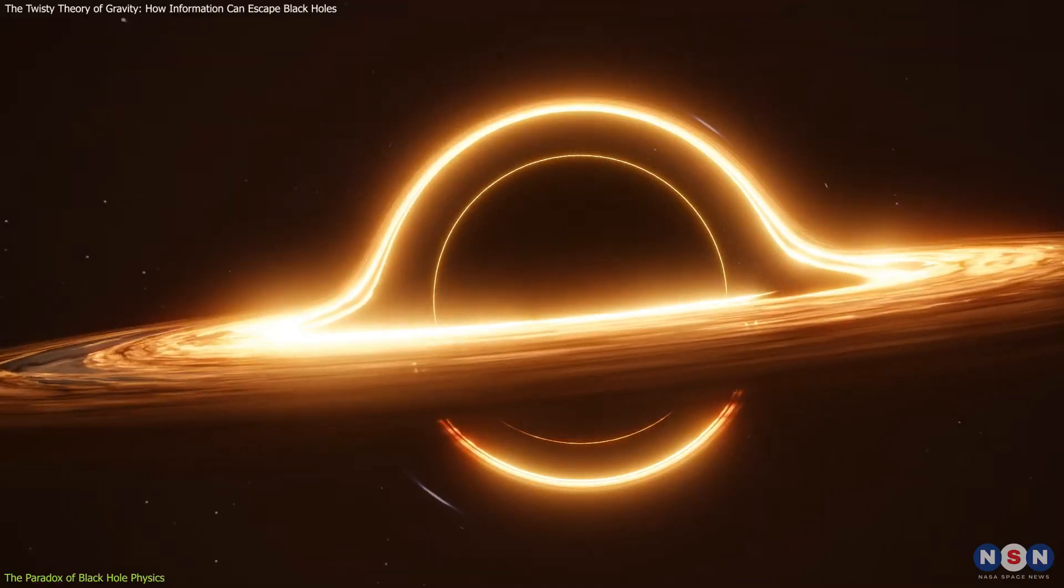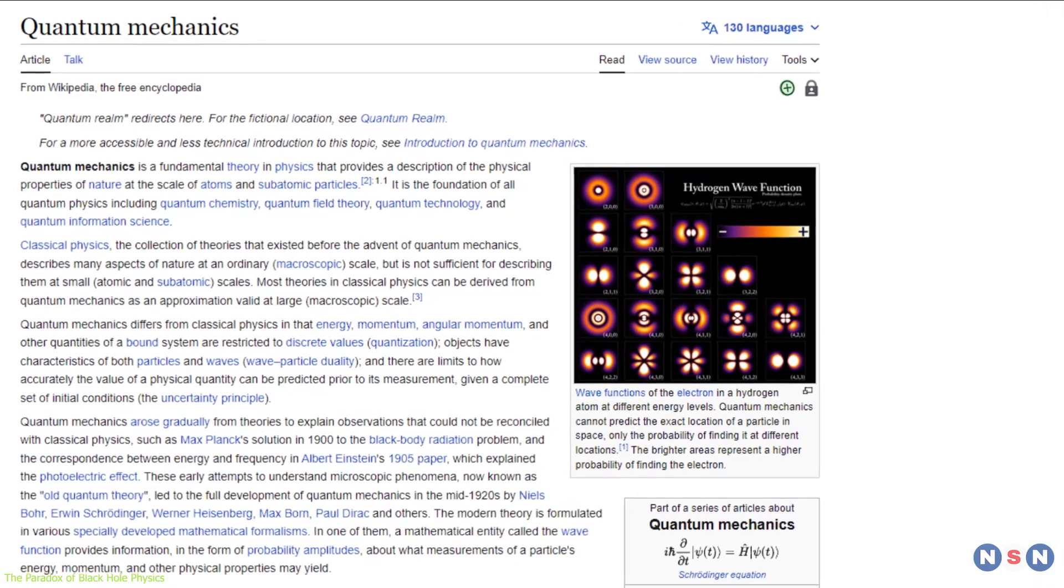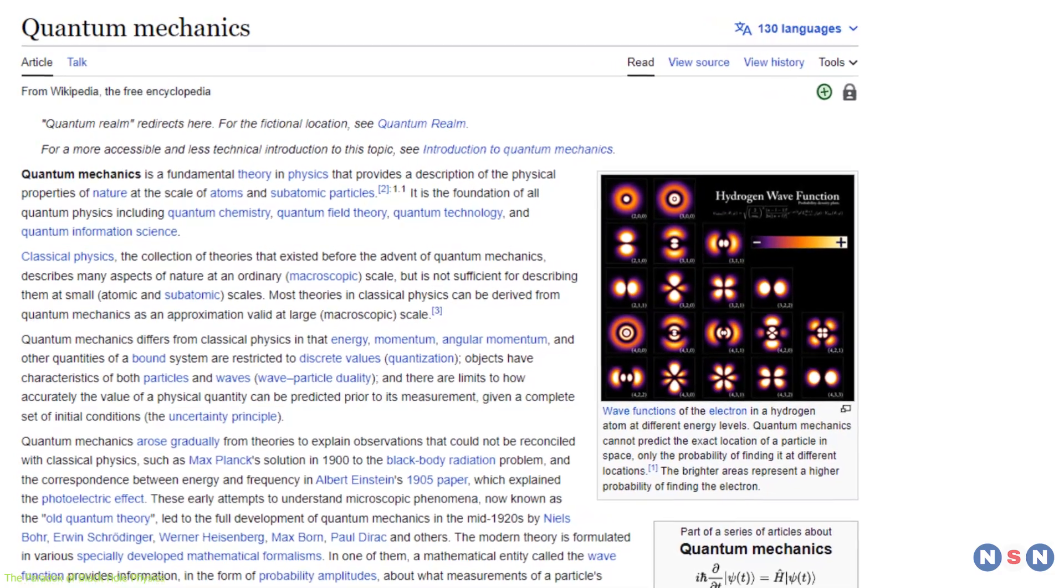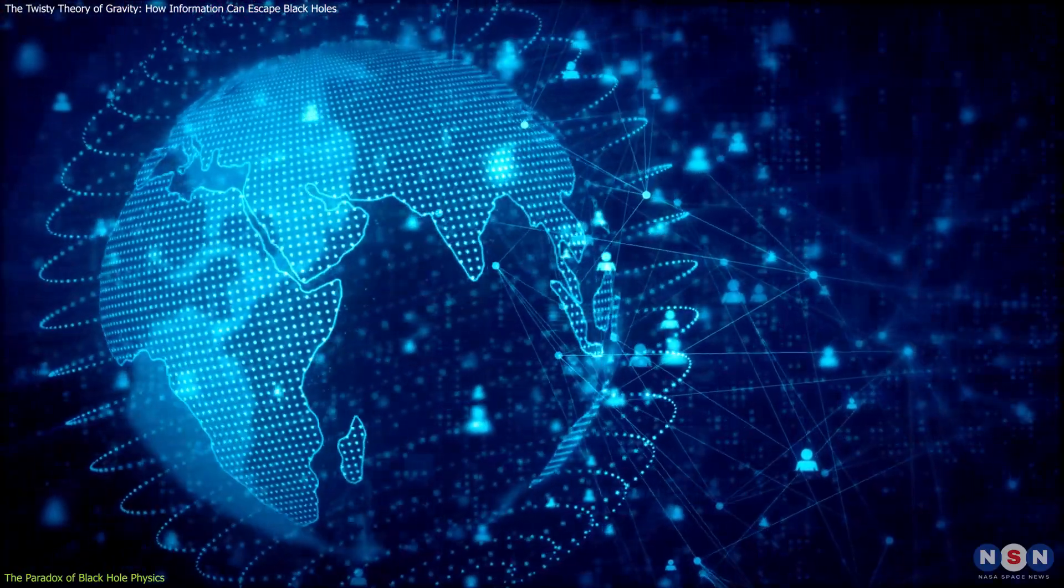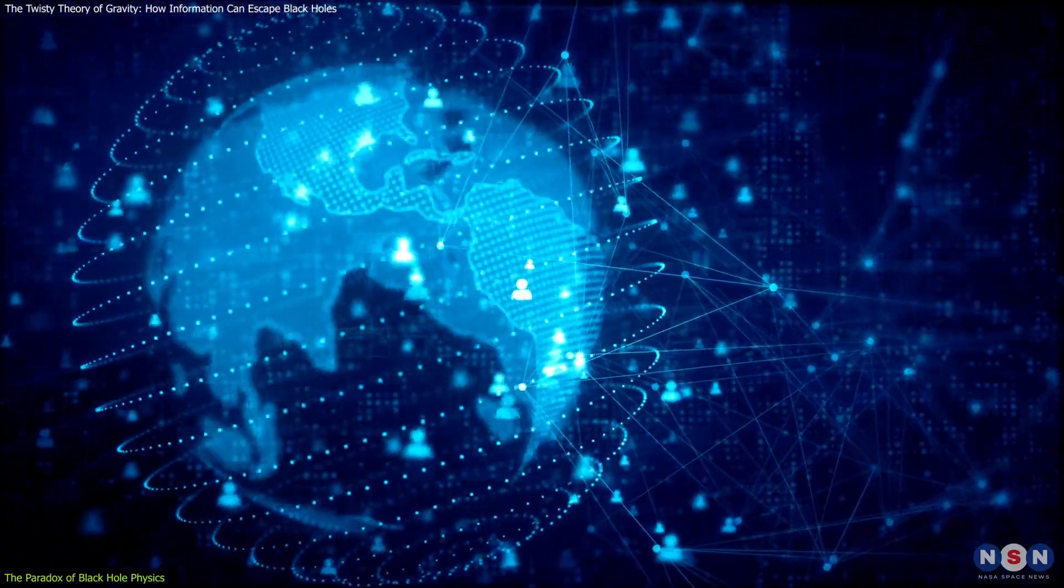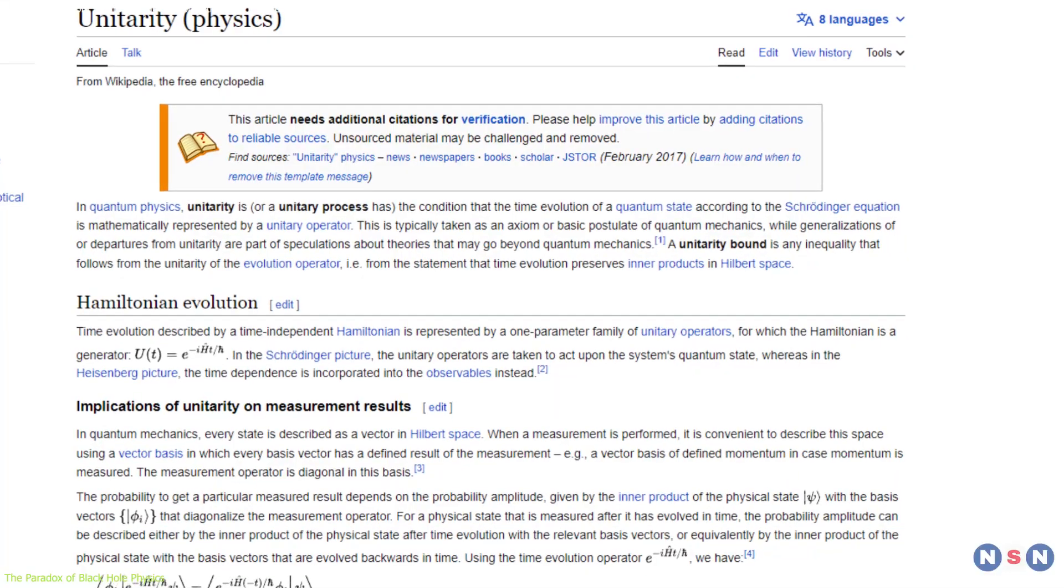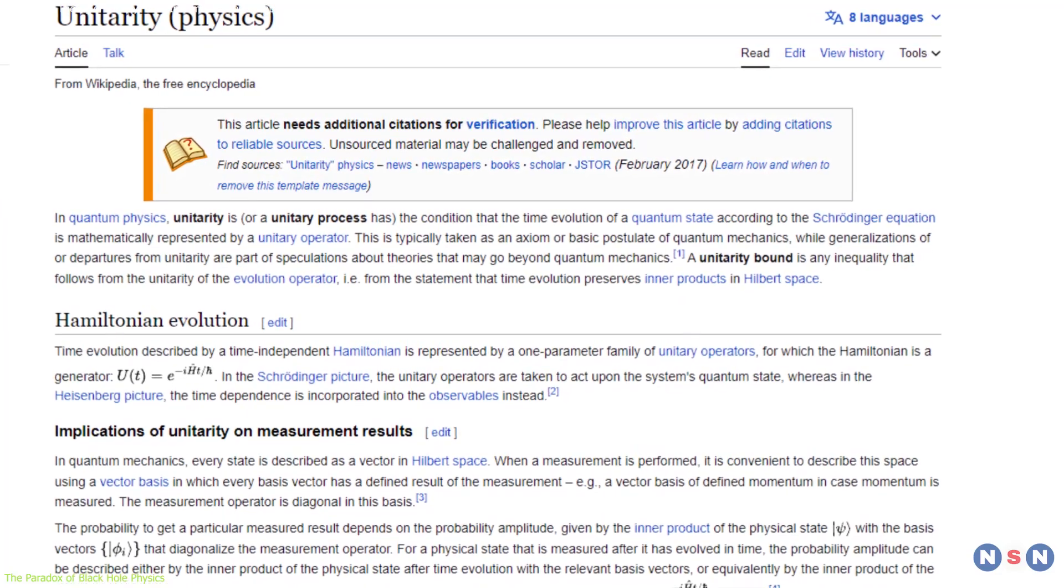However, this idea clashes with another fundamental theory of physics, quantum mechanics, which describes the behavior of matter and energy at the smallest scales. Quantum mechanics tells us that information cannot be created or destroyed, only transformed or transferred. This principle is called unitarity,